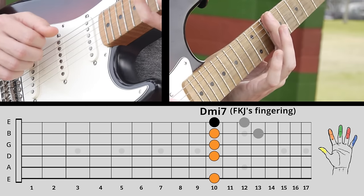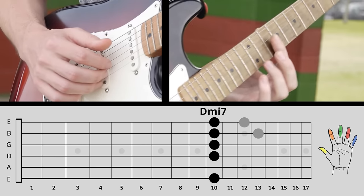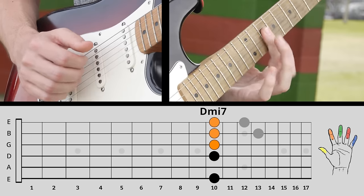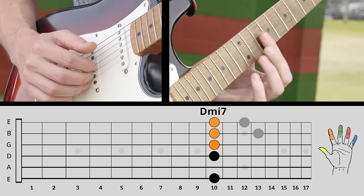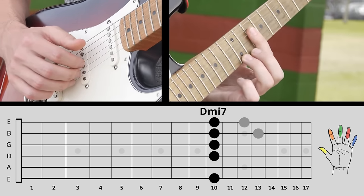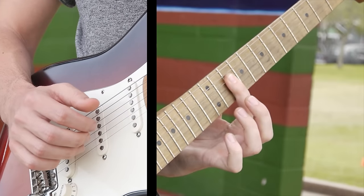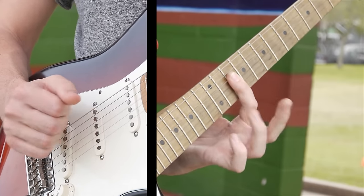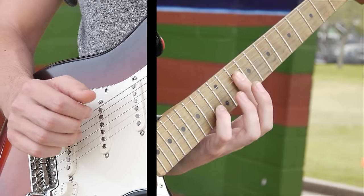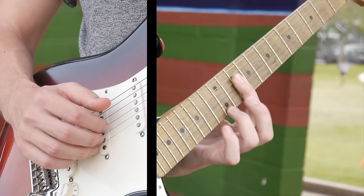Then the first little flurry riff he does is on that same chord, but you're just going to play those top three strings and then do this little hammer on on the E string to the 12th fret. Hammer on pull off, and then 13th back to 10th on the B string.